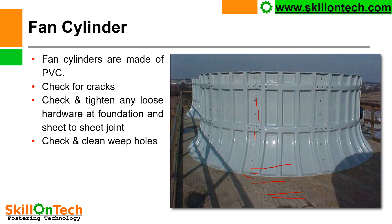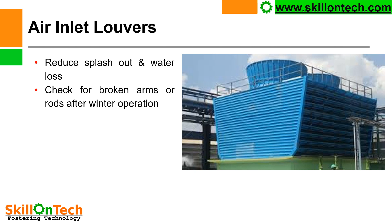Sometimes fan cylinders are tied with steel ropes to nearby rigid foundations to stop them from being damaged during high wind flows. Because during high velocity winds, these fan cylinders may get damaged, so they shall be protected by tying with tie ropes. Air inlet louvers — you can see in this picture these are the air inlet louvers. Air enters through the louvers inside the cooling tower. These louvers reduce splash-out and water loss into the atmosphere. If any louvers or their arms are found broken, they shall be replaced.